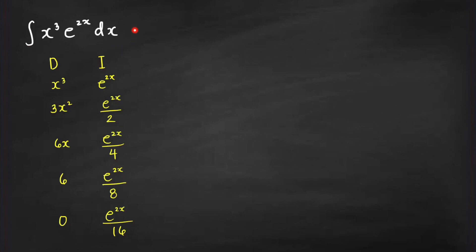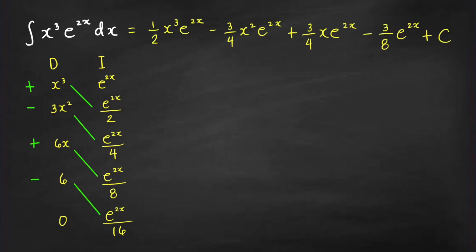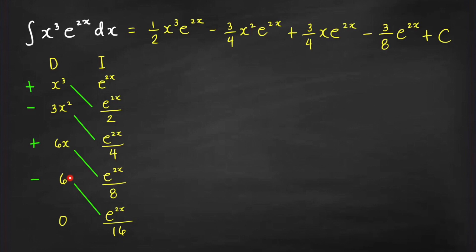Now we apply the slides-integrate method. Since the last derivative is 0, all rows are slides. Taking products with alternating signs gives: (1/2)x³e^(2x) minus (3/4)x²e^(2x) plus (3/4)xe^(2x) minus (3/8)e^(2x) plus C.